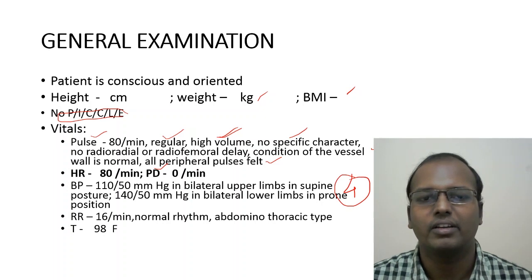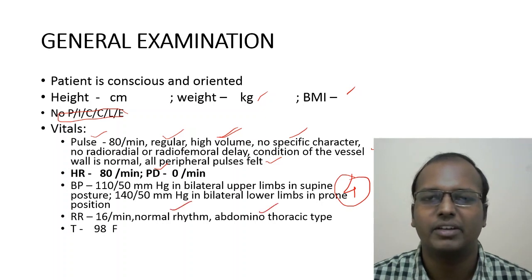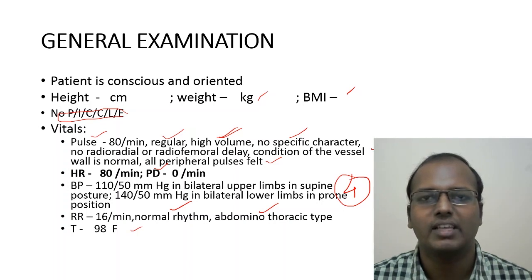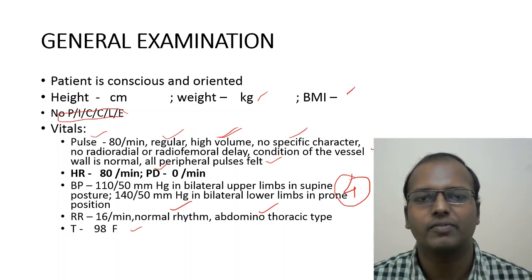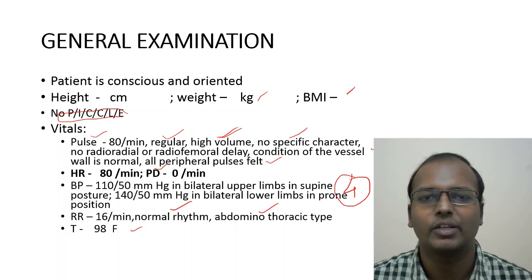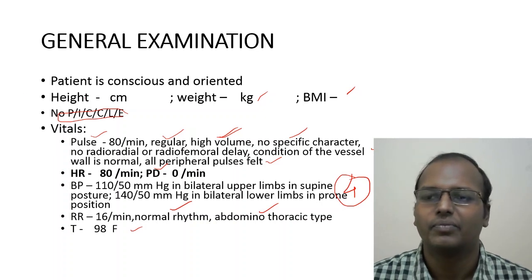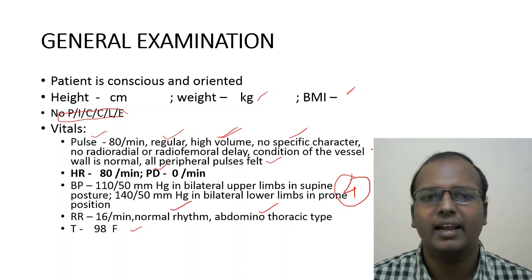Respiratory rate should be noted with rhythm and type — abdomino-thoracic type in males and thoraco-abdominal type in females. Temperature must also be mentioned, so always have a thermometer. If the examiner asks whether you checked temperature, you can say yes and show the thermometer as well.